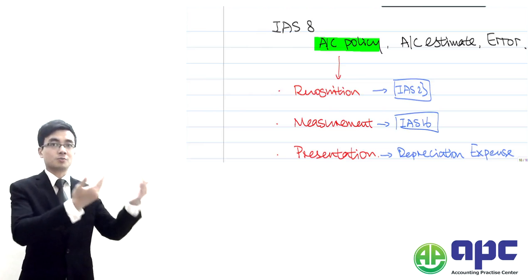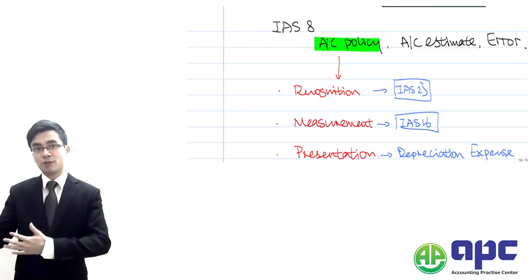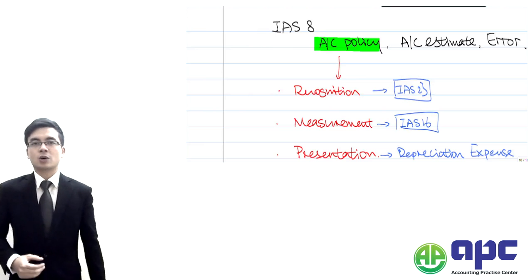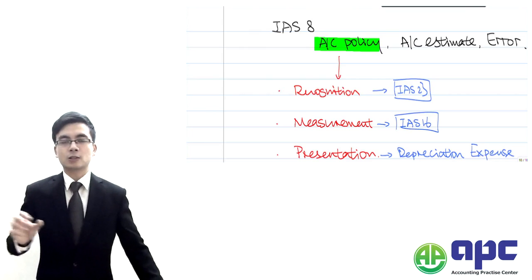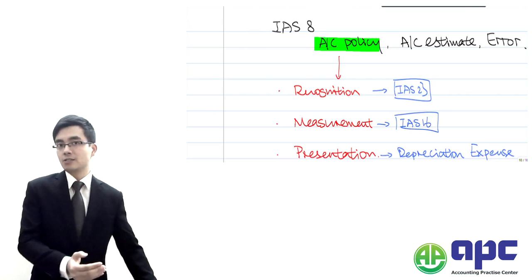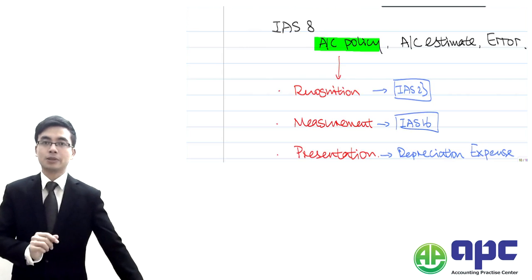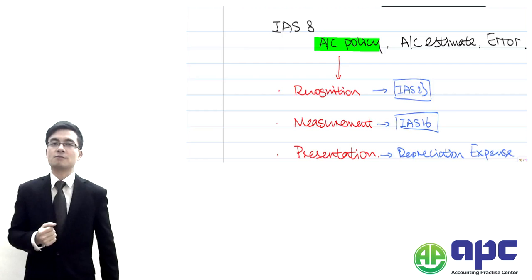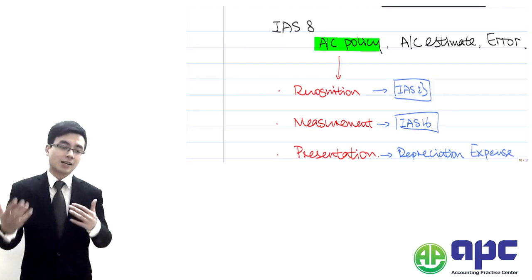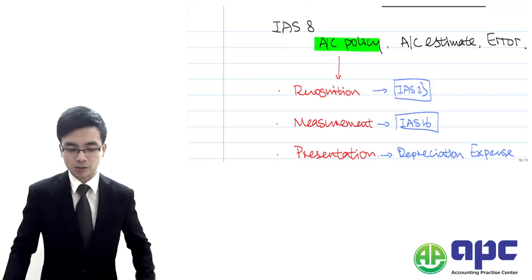We are not sure what comes in first and what goes out first. It's very hard to identify those particular oils. So we tend to use weighted average cost as the accounting policy when measuring inventory. That's all for accounting policies.